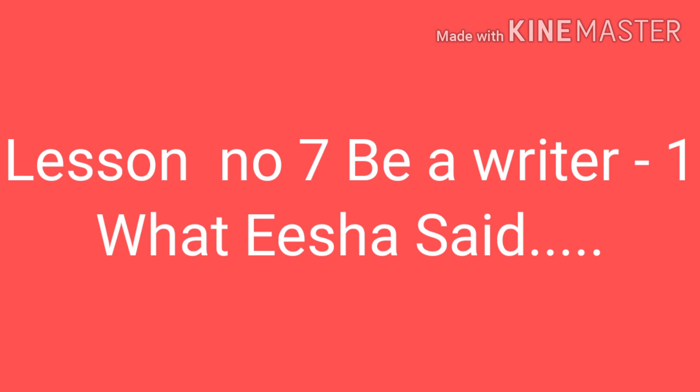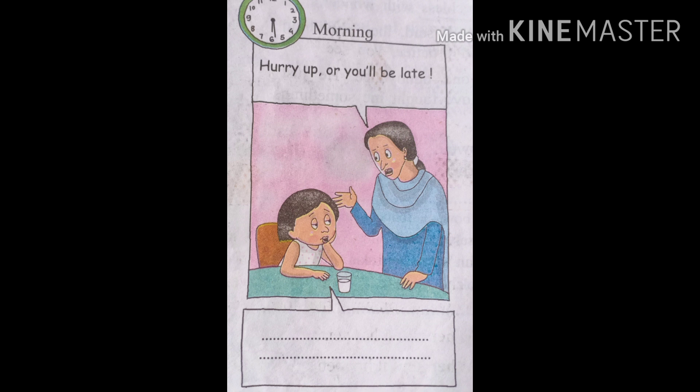Let us begin. Look at this first picture. On the left hand side at the top, you can see a clock. It's morning time, 6:30. You can see Mother and Isha in the picture. Mother must have said, 'Hurry up or you will be late.' Now, with the help of your imagination, can you guess what Isha must have said? Isha must have said, 'Mummy, can I go back to bed? I am still sleeping.'